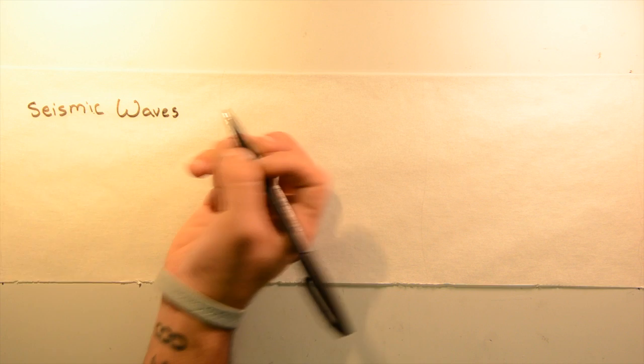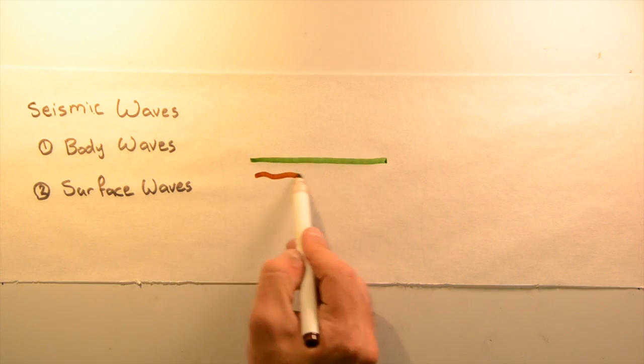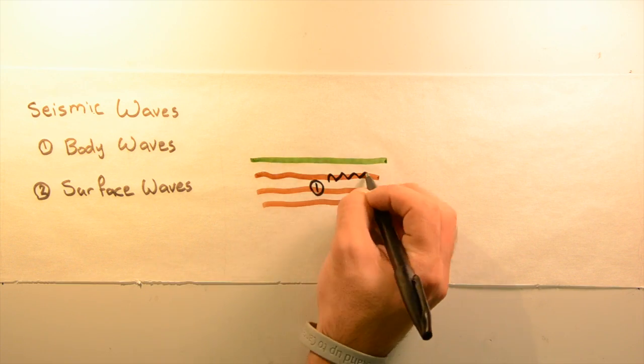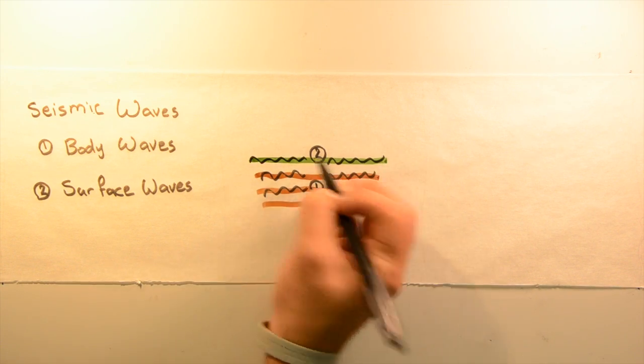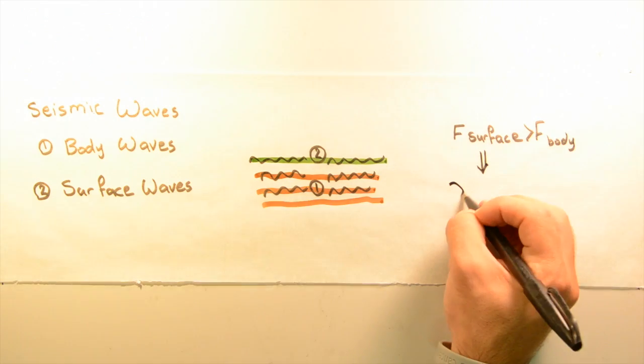There are two main types of seismic waves: body waves and surface waves. Body waves can travel through the inner layers of the Earth, which allows them to arrive before surface waves emitted by the same earthquake because they have a higher frequency.